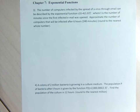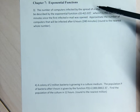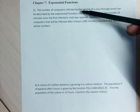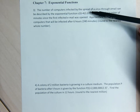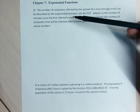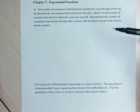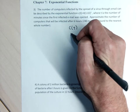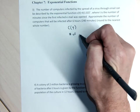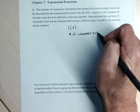Problems three and four are a little wordier. Number three talks about the number of computers infected by the spread of a virus through an email, which can be described by the exponential function C of T — I think C stands for the number of computers, T stands for some sort of time. C of T equals four times 1.02 to the T power, where T is the number of minutes since the first infected email was opened.